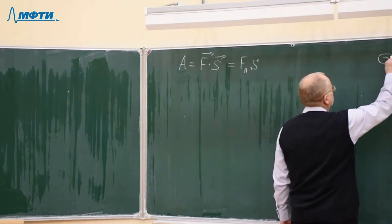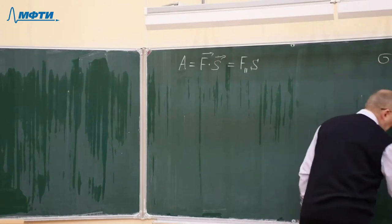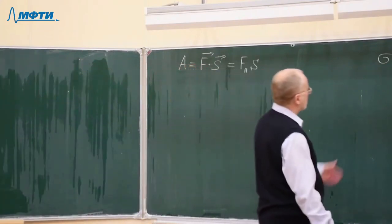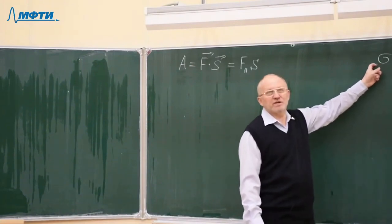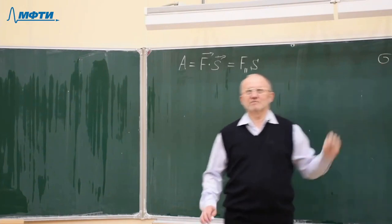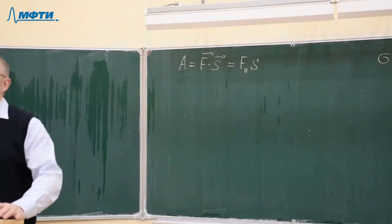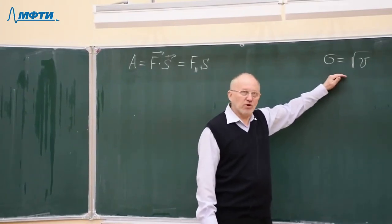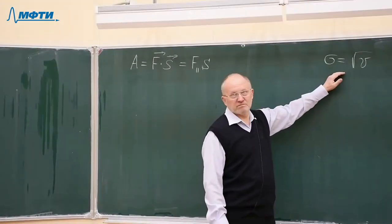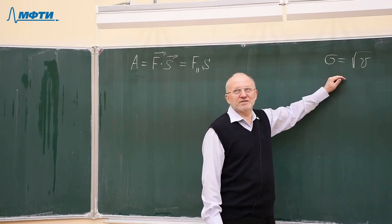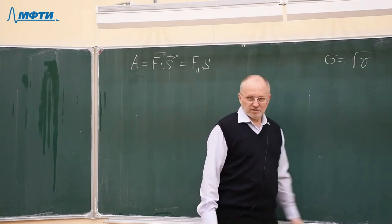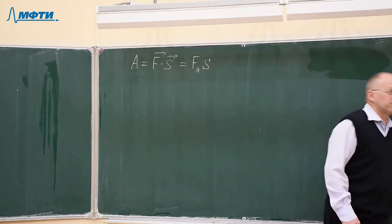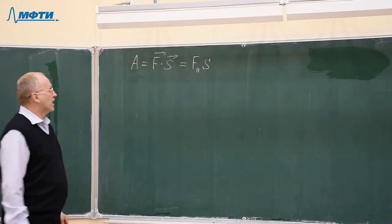For example, you can invent a quantity like the square root of speed. You can define it, give it a formula, call it any name you wish — let it be something like 'watermelon.' Do we have the right to do so? Certainly. But will such a quantity be of any use in solving practical problems? I doubt so. It will be useless. Many quantities can be invented, but only a few are of any use.